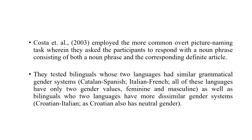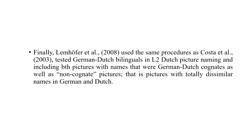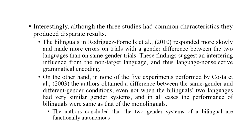In another study, Costa and colleagues employed the more common overt picture naming task where participants had to respond with a noun phrase consisting of a noun and corresponding definite article. They tested bilinguals whose two languages had similar grammatical gender systems — like Catalan-Spanish or Italian-French — or different gender systems such as Croatian and Italian, since Croatian also has neutral gender. In a third study using the same procedure, Costa and colleagues tested German-Dutch bilinguals on L2 Dutch picture naming, including both Dutch-German cognate pictures and non-cognate pictures with dissimilar genders in German and Dutch.